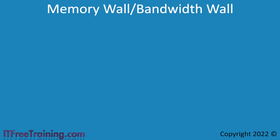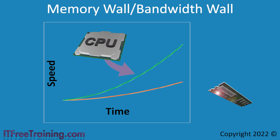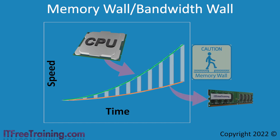In the early days of computing, CPU speeds increased very quickly — over some years, CPU speed doubled each year. The problem was memory speed was not increasing at the same rate as CPU speed. This created a gap between CPU performance and memory performance, referred to as the memory wall or bandwidth wall.